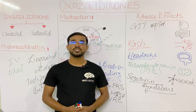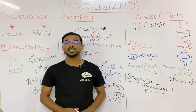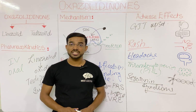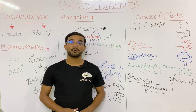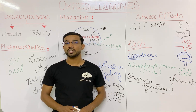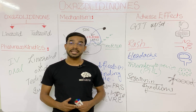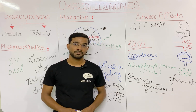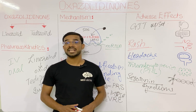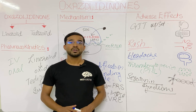Serotonin syndrome results from increased levels of serotonin, a neurotransmitter, and presents with three important groups of symptoms. First, altered mental status — including agitation and pressured speech. Second, autonomic dysfunction — meaning the autonomic nervous system is not working properly, causing tachycardia, diaphoresis, and diarrhea. Third, neuromuscular excitation — including clonus, tremor, and seizures.